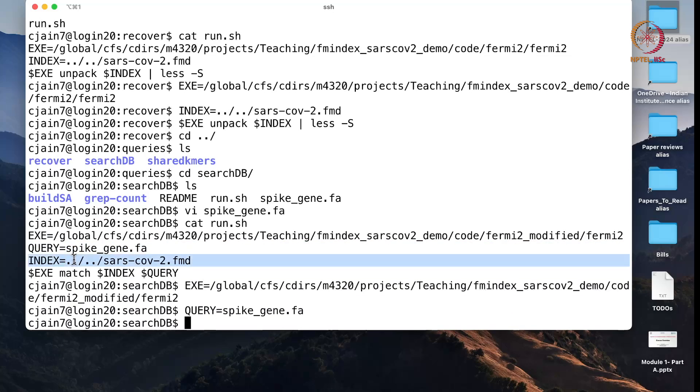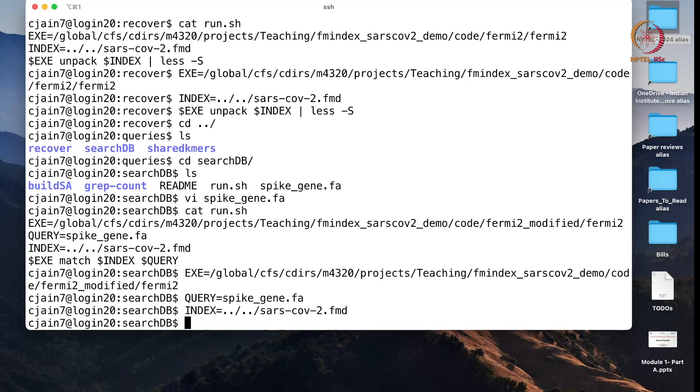I am going to specify the index and I am going to run a command called match that uses that index and the query sequence and the purpose of this matching is to tell whether that pattern occurs in that entire database and if that pattern occurs, then tell me how many times it occurs.